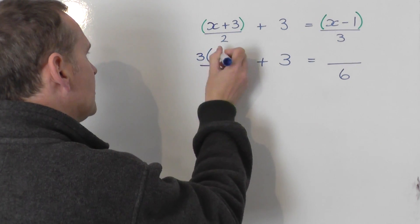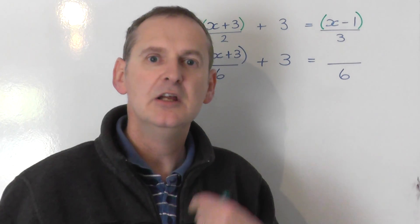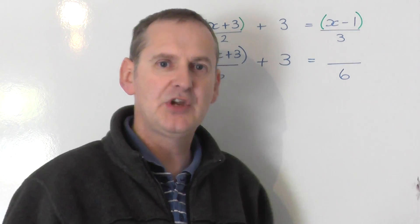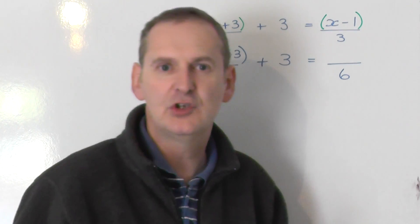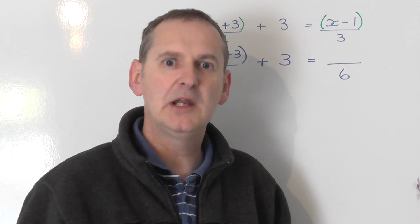I always suggest you put 3 outside the bracket, so you get 3 lots of the bracket. Don't try and be clever and work it out in your head by saying, x plus 3, if you treble it, you get 3x plus 9. You do, but you're more likely to make a mistake.